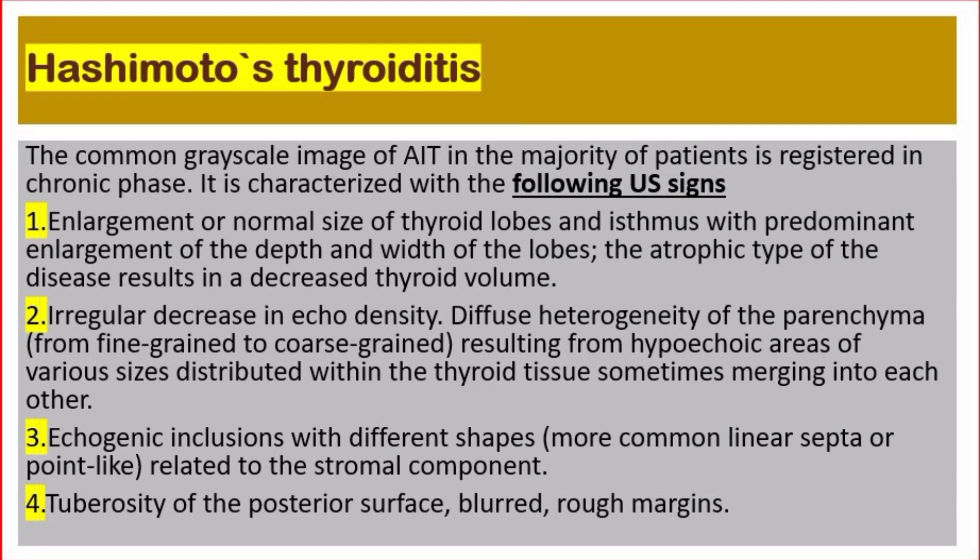The common gray scale image of autoimmune thyroiditis in the majority of patients is registered in the chronic phase. It is characterized by the following ultrasound signs. Number one: enlargement or normal size of the thyroid lobes and isthmus, with predominant enlargement of the depth and width of the lobes. The atrophic type results in decreased thyroid volume. Number two: irregular decrease in echo density — diffuse heterogeneity from fine-grained to coarse-grained, resulting from hypoechoic areas of various sizes distributed within the thyroid tissue, sometimes merging into each other.